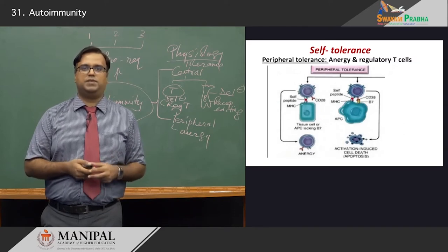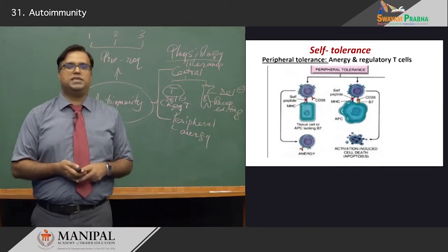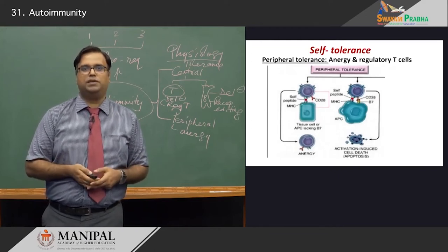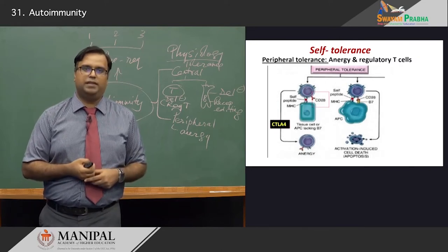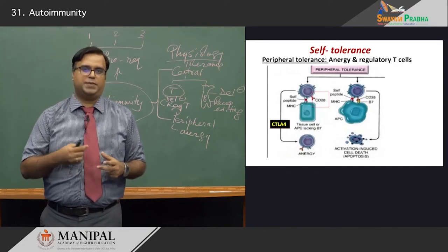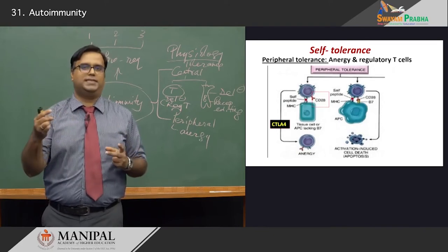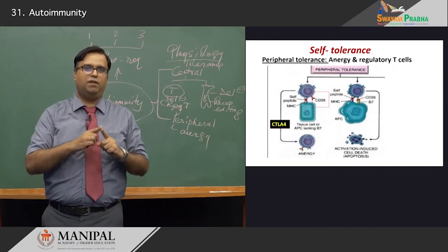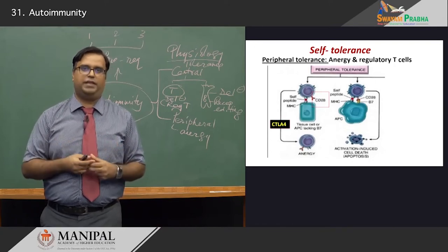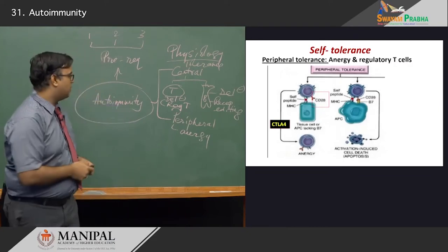Once the antigen-presenting cell reacts with your T lymphocyte, there is a downregulation of molecules such as CD28, so your associated molecule level drops and you do not have a signal 2. It has also been noted that there is upregulation of other molecules such as CTLA4, which have a higher affinity to bind the co-stimulatory molecules — so CTLA4 binds B7 instead of CD28. Imagine a condition where you have signal 1 being generated but no signal 2 — those T cells are rendered inactive, cannot produce cytokines, and this is another important checking mechanism. This is called anergy.